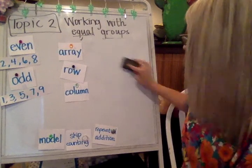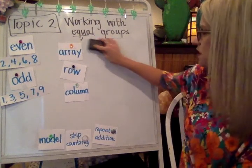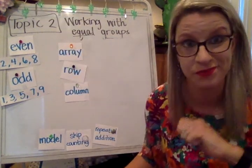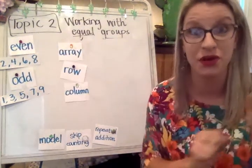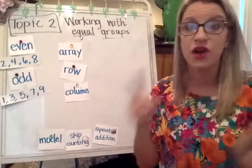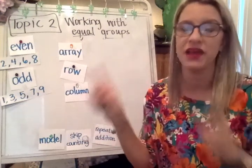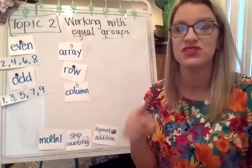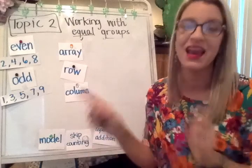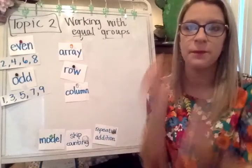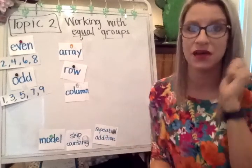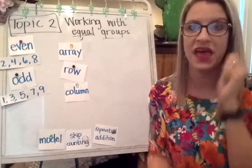With rows and columns, something I want you to remember is this little chant: Rows, rows, left to right, left to right, left to right. Columns, columns, up and down, up and down, up and down.